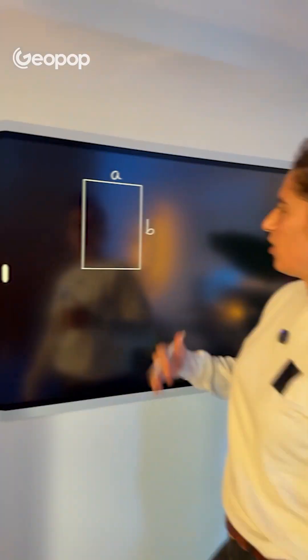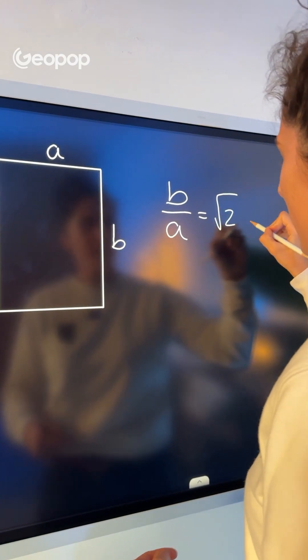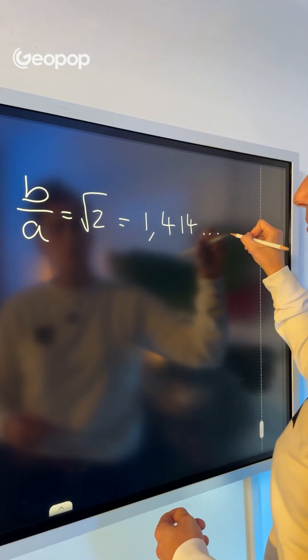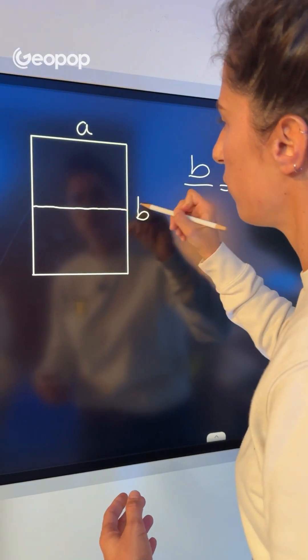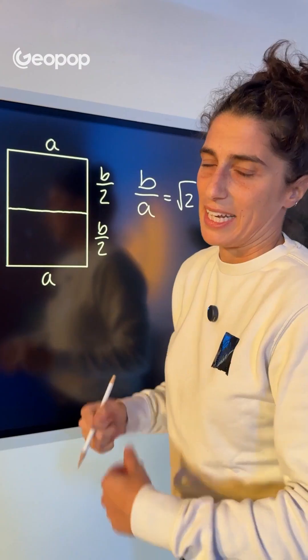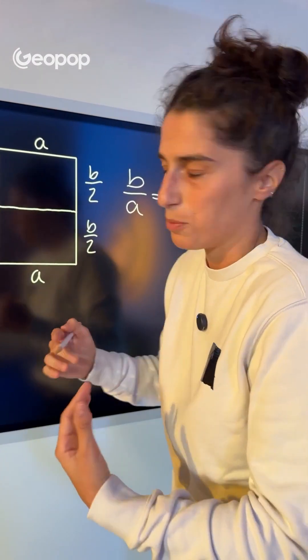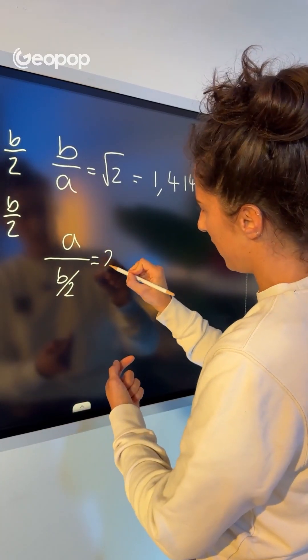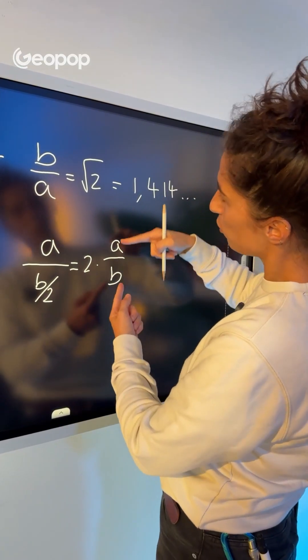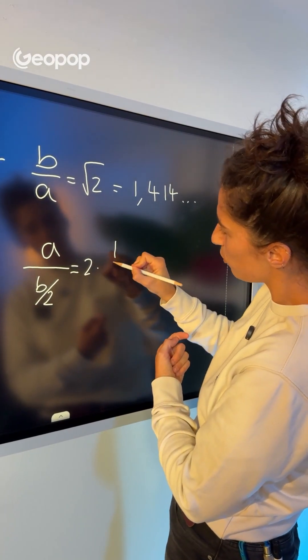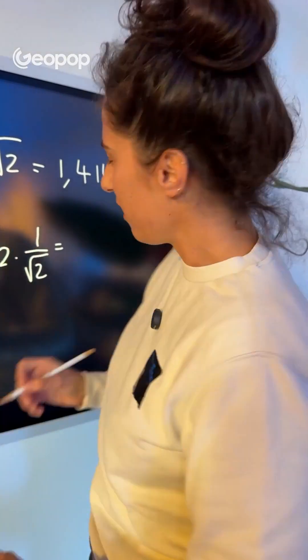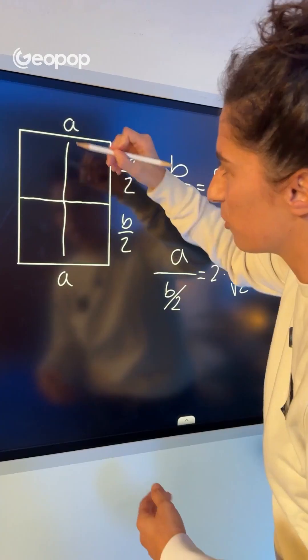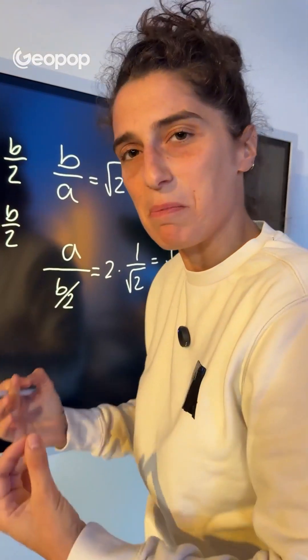But why does the ratio between the sides remain the square root of 2 when the sheet is divided in two? Well, let's consider any sheet where the ratio between sides B and A equals the square root of 2, approximately 1.414. If we divide the sheet in half, we get two sheets with sides A and B divided by 2. The ratio between the two sides — always taking the longer side over the shorter — becomes A over B divided by 2, which equals 2 times A over B. And A over B is exactly the inverse, so it's 1 over the square root of 2. And 2 divided by the square root of 2 is the square root of 2. So continuing to divide, the ratio of the sides is always the square root of 2.